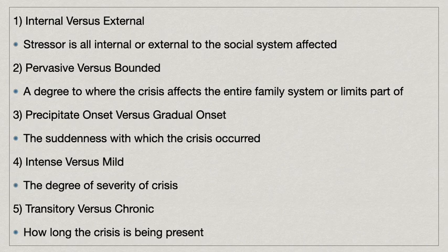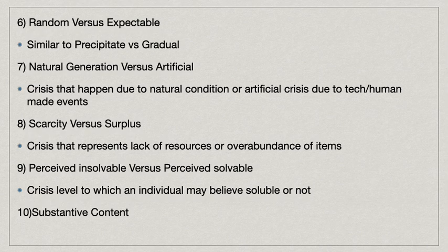Number four is intense versus mild, which is the degree of severity of the crisis. Number five is transitory versus chronic, which is the degree to which the crisis is either long-term or short-term. Number six is random versus expectable — similar to onset type — where a crisis could happen randomly or expectantly. Number seven is natural versus artificial, meaning a crisis due to natural conditions such as natural disasters like a hurricane, versus artificial crises resulting from technology problems or war.